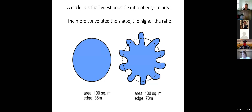A circle has the lowest possible ratio of edge to area. The more convoluted the shape, the higher the ratio. Both these patches have the same area of 100 square meters. But the edge for the circle is only 35 meters, while the edge on the elongated shape is double that at 70 meters.